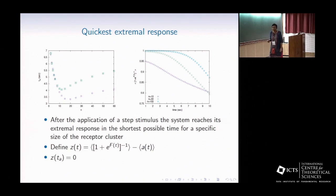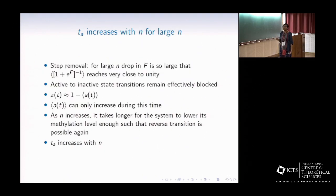To explain this result, we define this variable z(t), which is the difference between the Boltzmann form and the average activity. By definition, at t equals t*, z(t*) is 0. First, I will show that t* increases with n for large n. Consider the case of step removal. When n is very large, then this drop in free energy becomes very large, such that e^F becomes very small, and this quantity is very close to unity. This means active to inactive state transitions are effectively blocked.